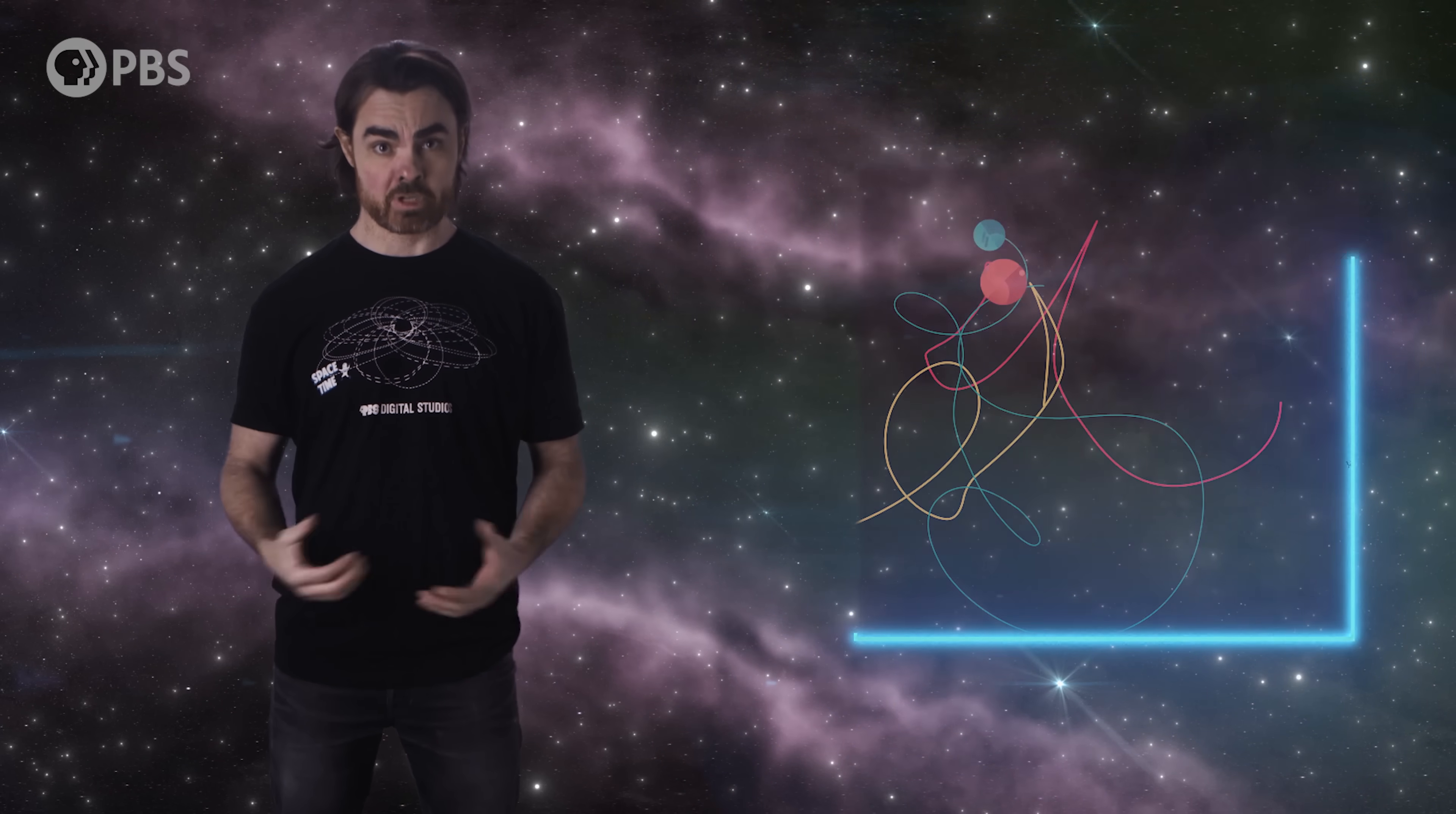Add just one more body, and in most cases, all motion becomes fundamentally chaotic. There exists no simple solution. This is the three-body problem, and we've been trying to solve it for 300 years.